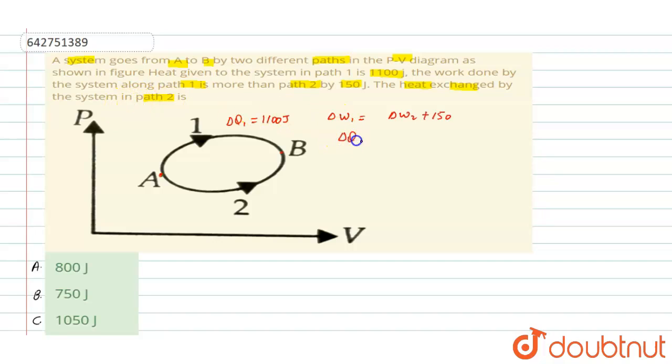Now we know that internal energy of the system is independent of the path in the PV diagram. So we can write here, internal energy of the system is path independent. So if we will go from point A to B along path 2 and along path 1, internal energy will remain constant. So we can write here del U is equal to constant.